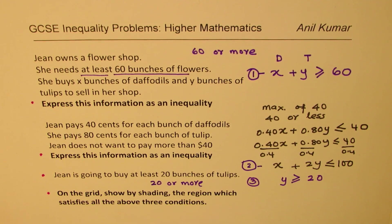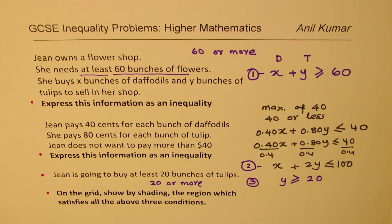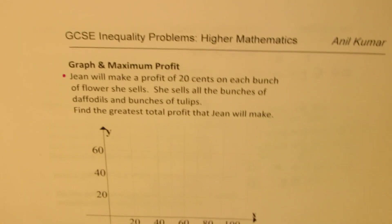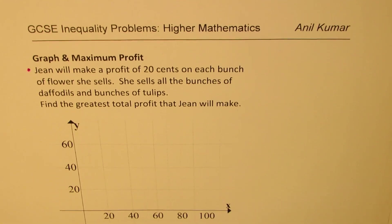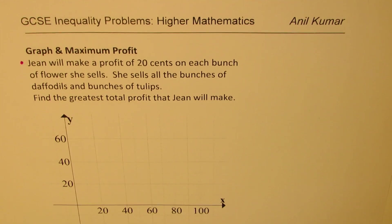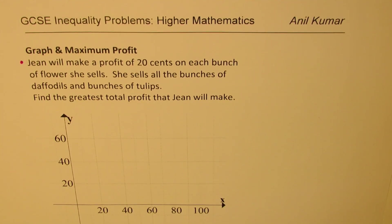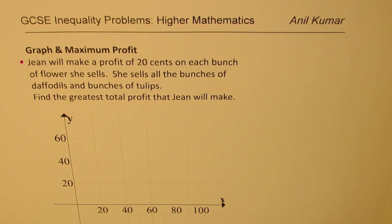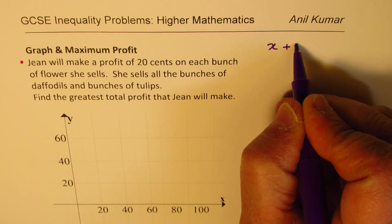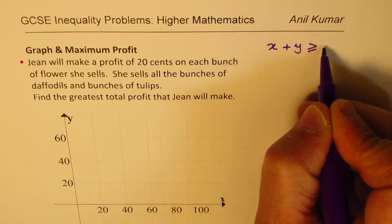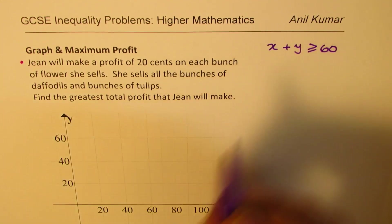Now we need to sketch them on the same graph. So let me pull out a graph paper. On this page will now work. We have three equations. All three will work on this page. So the three equations which we have is one that we have in all 60 or more flower bunches.